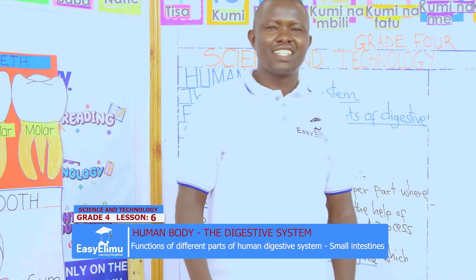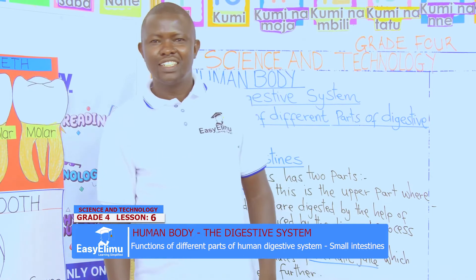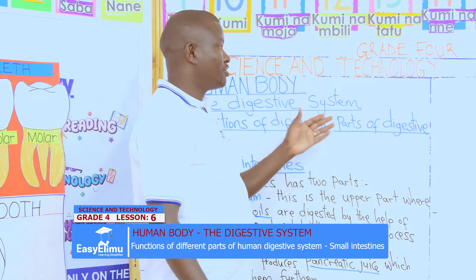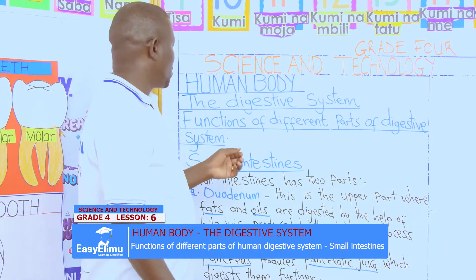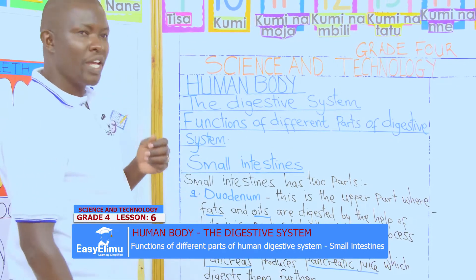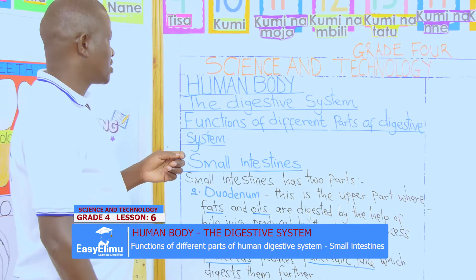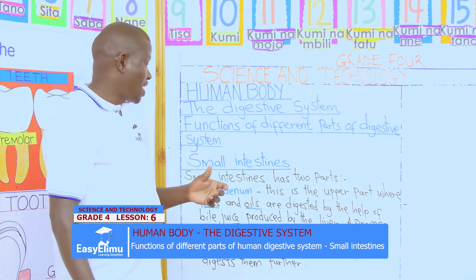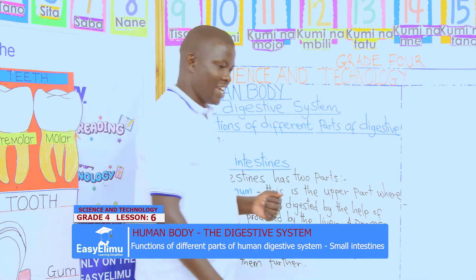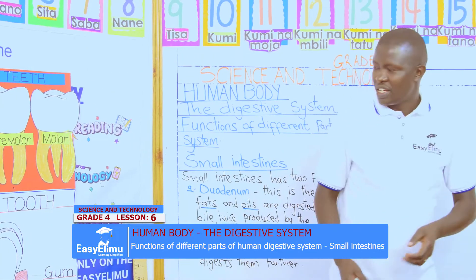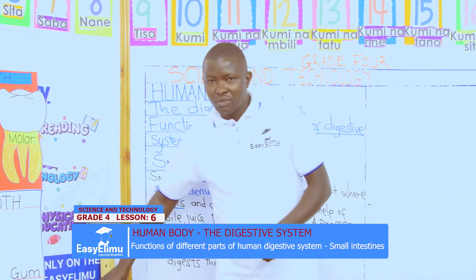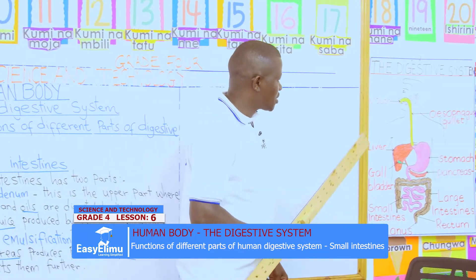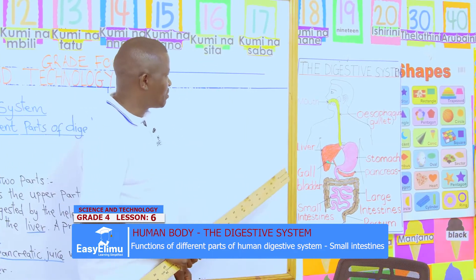Hello my learner, this is teacher Jonathan. Welcome to Easy Limu Learning Simplified. Our grade 4 science and technology on human body — we are still looking at functions of different parts of the digestive system, and today we are on small intestines. Before we go to the small intestines, I would wish we remind ourselves on what we learned in our previous lessons.